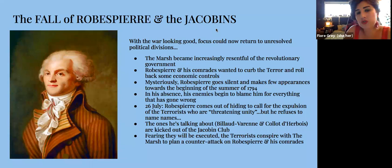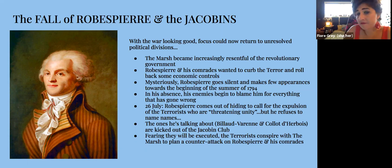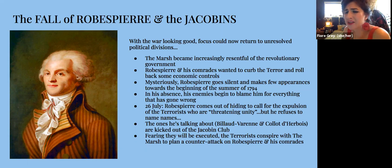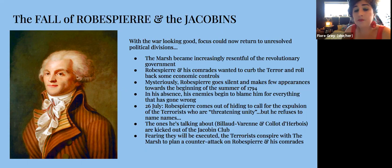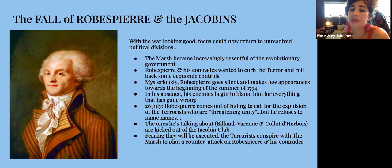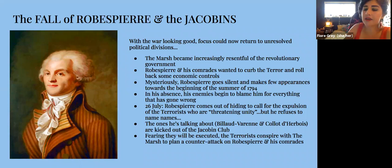The fall of Robespierre and the Jacobins followed. With the war looking good, attention returned to political divisions. The Marsh had become increasingly resentful of the revolutionary government. Robespierre and his comrades wanted to curb the terror and roll back some economic controls. Mysteriously, Robespierre went largely silent in the early summer of 1794 — some historians suggest a nervous breakdown. In his absence, all his enemies began to conspire against him, making him an easy scapegoat. On July 26th, Robespierre finally reappeared calling for the expulsion of all terrorists threatening unity, but refused to name names — though everybody knew who he meant.